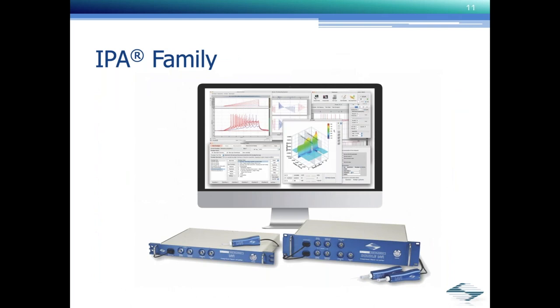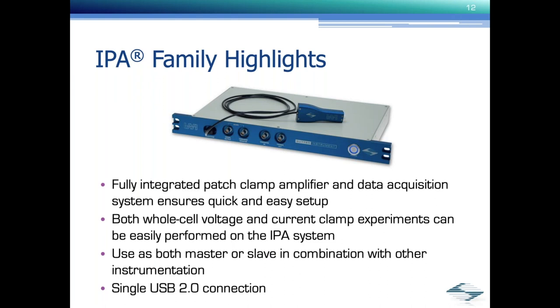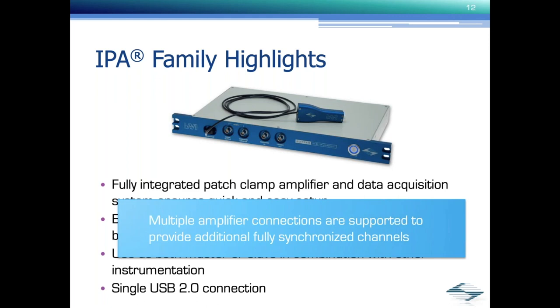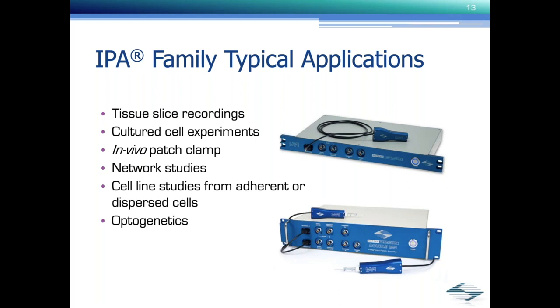We introduced the IPA and the Sutter patch software in the fall of 2015. A year later, it was followed by the double IPA. All of the IPA family members share the same specifications, which is fully integrated patch clamp amplifier and data acquisition system for quick and easy setup. They support both whole cell voltage and current clamp experiments. They support master-slave combination with other instrumentation, and they use a single USB connection. One thing that many people are not aware of is that multiple IPA amplifiers can be connected and are fully supported in the Sutter patch software to provide additional fully synchronized channels. They can be used in a broad range of whole cell and current clamp applications.